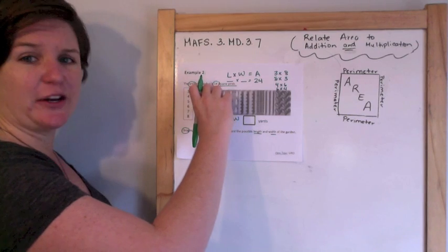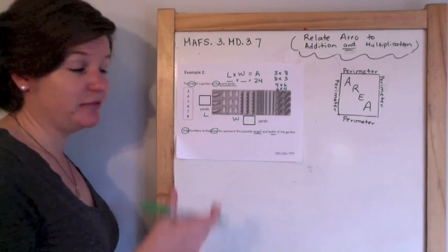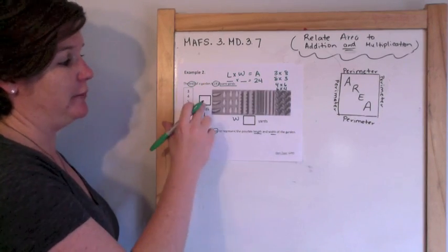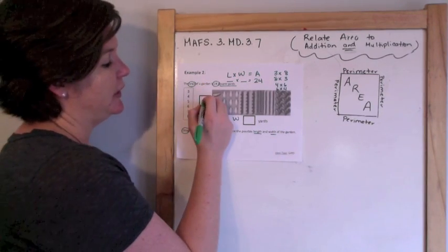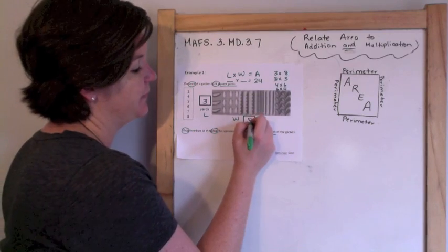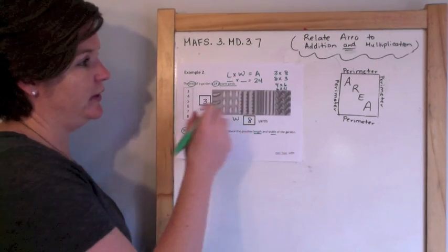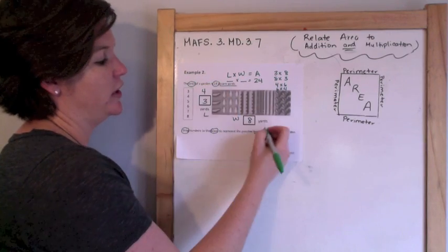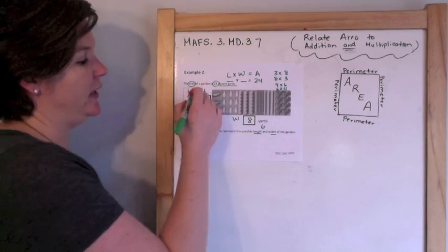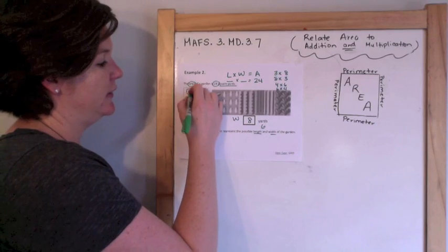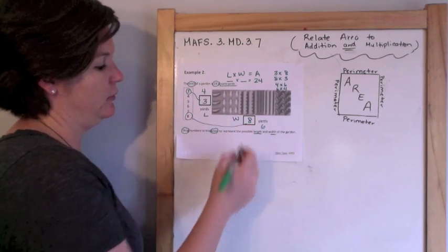Because one side looks remarkably smaller than the other side, I'm going to put the smaller number there. Our answer could be 3 yards and 8 yards — a 3 yards by 8 yards garden — but you could also do 4 yards by 6 yards. To drag that, I'm picking 3, so that goes there, and I'm also choosing 8, which would go there.